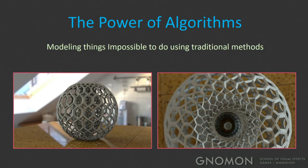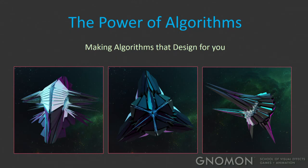Some of the benefits of using algorithms for modeling and designing is that you can do things you wouldn't be able to do with traditional methods — a lot of what I do is based on mathematical functions. I also did this candle holder using algorithms. You can also make algorithms that design for you. These spaceships were generated using sine functions; I didn't know exactly what the end result would look like. All three are the same exact algorithm — only four numbers differ — yet one looks like a fighter, one like a mothership, one like the final boss.